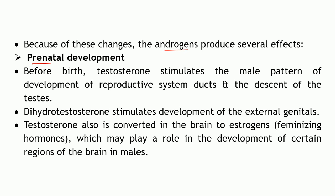The first effect of androgens is prenatal development. Before birth, testosterone stimulates the male pattern of development of the reproductive system. The testes, which develop near the kidneys, descend downward into the scrotum as the fetus grows — a process promoted by these androgens. Dihydrotestosterone stimulates the development of external genitals. When testosterone is converted into estrogen in the brain, it may play a role in the development of certain brain regions in the male.